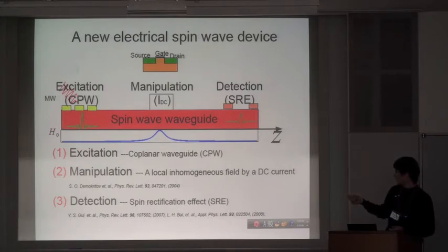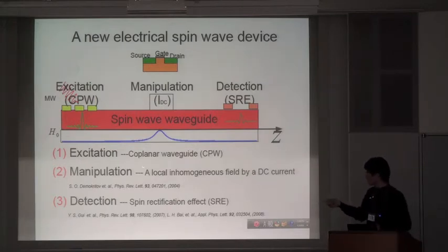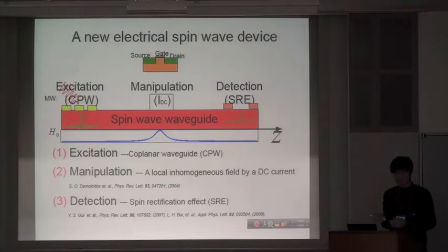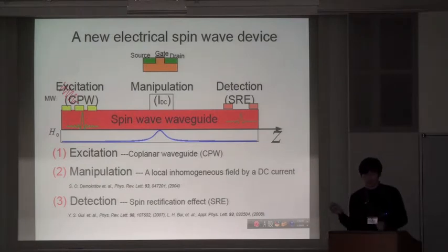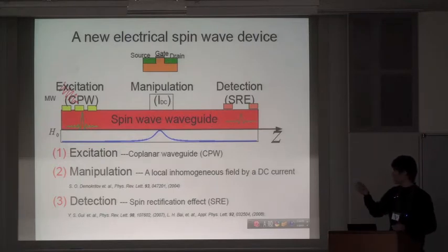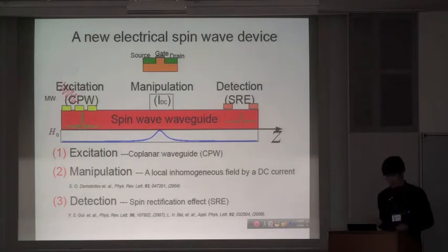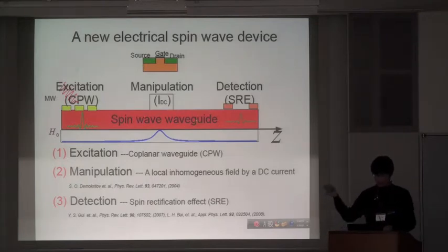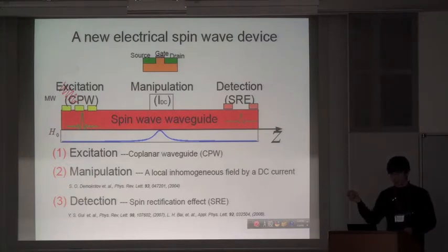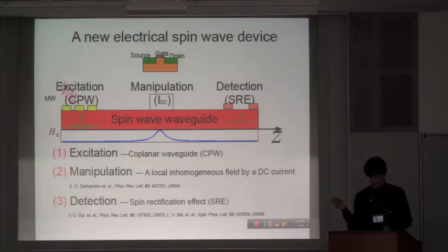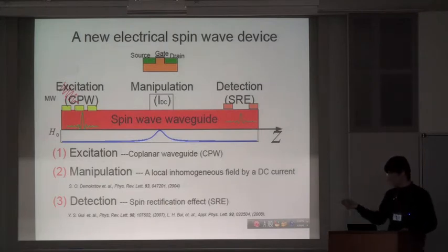My excitation will, spin wave will be excited by microwave through a well-designed coplanar waveguide, we call it a CPW. And manipulated by a local inhomogeneous magnetic field, which induced by DC current applied cross-over the waveguide, the spin-wave waveguide. And also detected by voltage or resistance on the basis of spin rectification effect here.